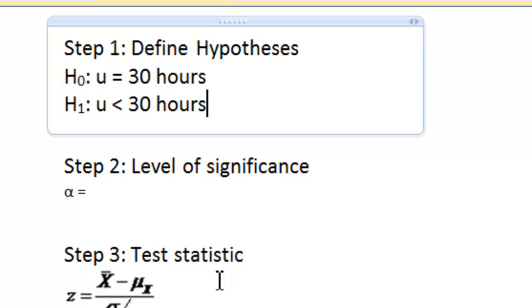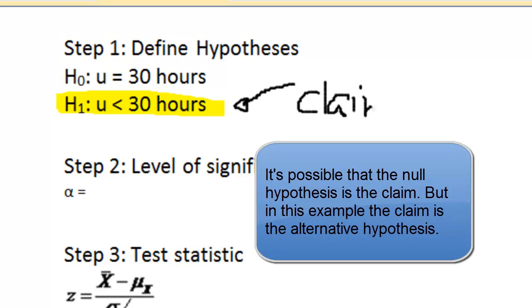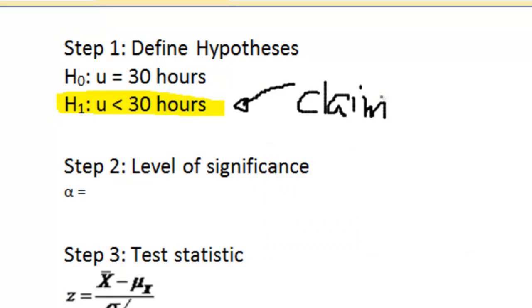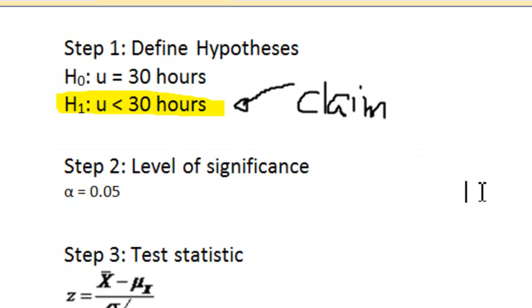At this particular stage, I'm going to show you that the alternative hypothesis in this example is the claim. So that's why I'm highlighting it. Let me just draw a little arrow here and say this right here is the claim. This is important because we're going to need it later on for step number 6. The next thing is we were told to use a level of significance of 5%. So because our level of significance is 5%, that's alpha equals 0.05.